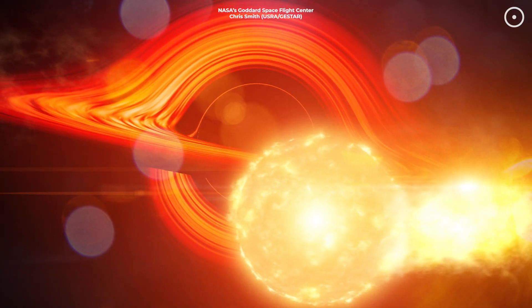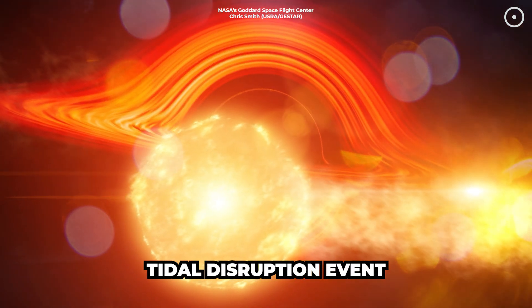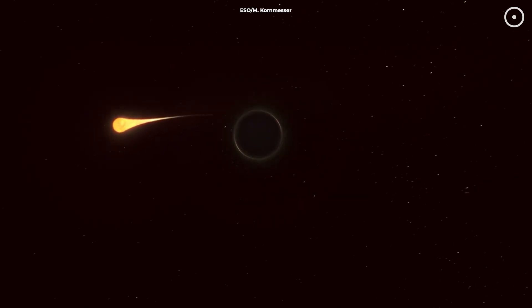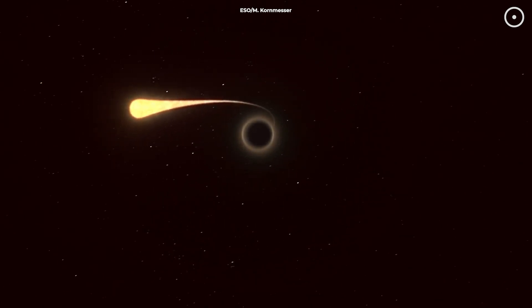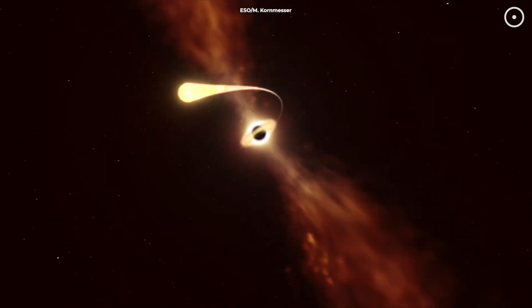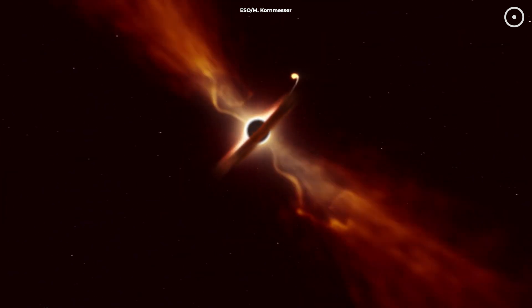Another possibility is that the powerful explosion might have been a tidal disruption event. This happens when a star gets too close to a supermassive black hole. The black hole's gravity rips the star apart, and the resulting debris gets superheated, creating an extremely bright flare. It's like the black hole had a cosmic snack, and the explosion we saw is the mess it left behind.